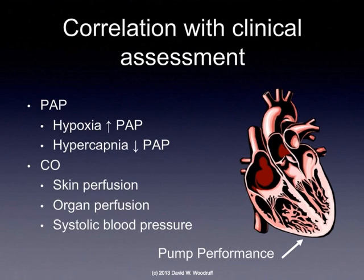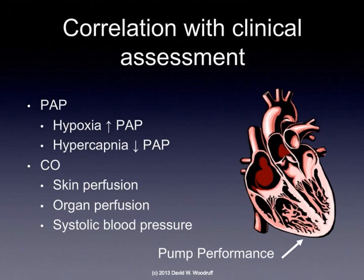Our pump performance — otherwise called cardiac output — can be assessed on the right-hand side of the heart by looking at pulmonary artery pressure, or on the left-hand side by looking at cardiac output directly. If we don't have invasive technology to evaluate cardiac output, we can also evaluate these components: if our patient has hypoxia, chances are great that we're going to have an increase in our pulmonary artery pressure, because we get vasoconstriction with hypoxia. If the patient has hypercapnia — a high CO2 level — we could expect a lowering of our pulmonary artery pressure, because hypercapnia causes vasodilation.